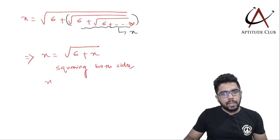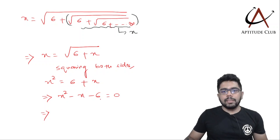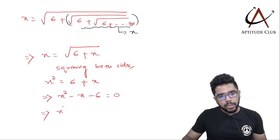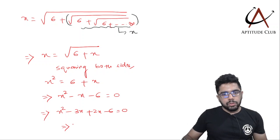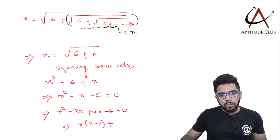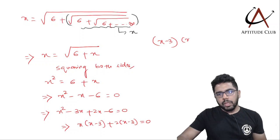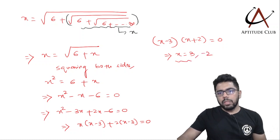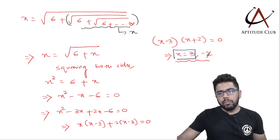Squaring both sides gives x² = 6 + x, so x² − x − 6 = 0. Using middle-term factorization: x² − 3x + 2x − 6 = 0, giving x(x − 3) + 2(x − 3) = 0, or (x − 3)(x + 2) = 0. This gives two values: x = 3 or x = −2. Since x is a positive real number, we take the positive square root: x = 3.